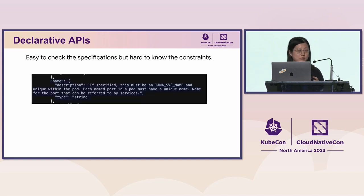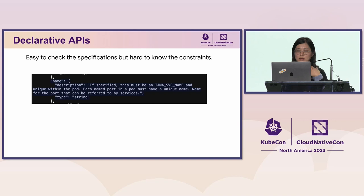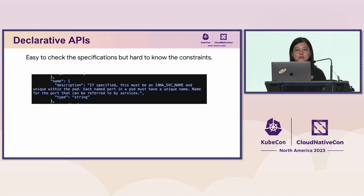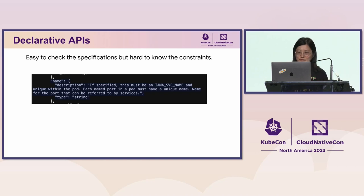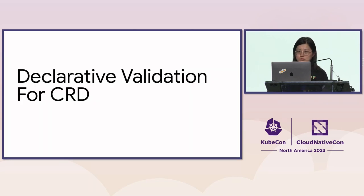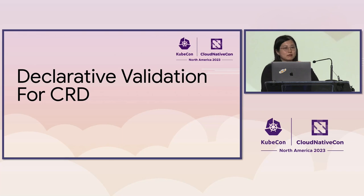Here is an example of the current OpenAPI specification, which gives you exactly what I mentioned — you're supposed to have a name, the name is supposed to be a string, and that's it. People may argue that you can write a very detailed description and the user should read all of it and follow it, but everyone knows that's not what happens in the real world.